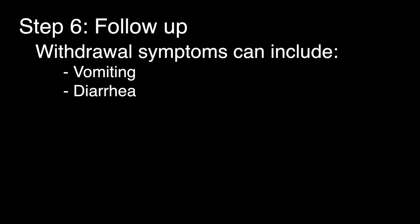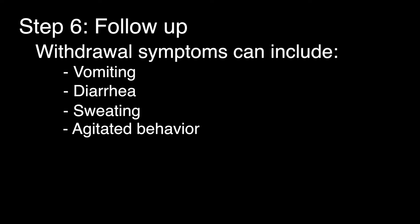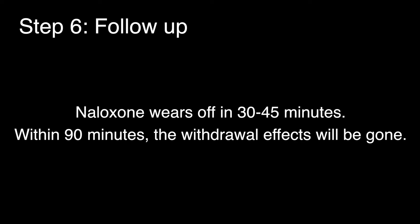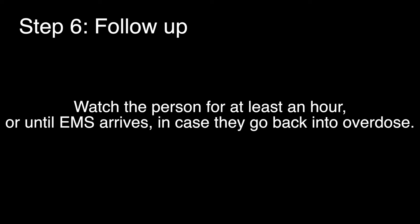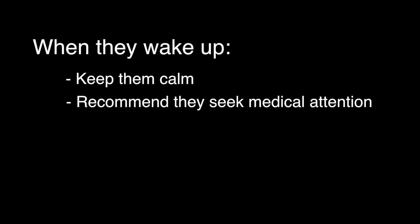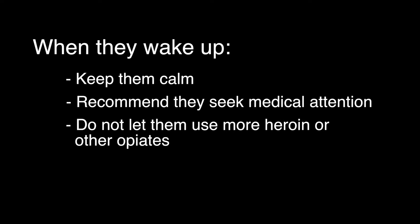Step 6. Follow-up. If the person is dependent on heroin or other opiates, they may go into withdrawal after you give them naloxone. Withdrawal symptoms can include vomiting, diarrhea, sweating, and agitated behavior. This may be unpleasant and dramatic, but it is not life-threatening and only lasts until the naloxone wears off. Tell them that naloxone wears off in 30 to 45 minutes and there are still drugs in their system. Within 90 minutes, the withdrawal effects will be gone. Watch the person for at least an hour or until emergency medical services arrive in case they go back into overdose. When they wake up, keep them calm. Recommend that they seek medical attention. Do not let them use more heroin or other opiates — the naloxone will block it and they could overdose again once the naloxone wears off.